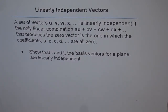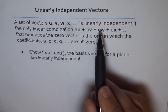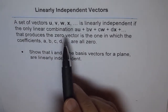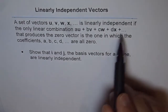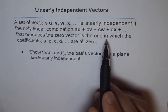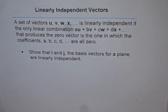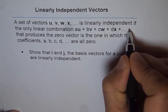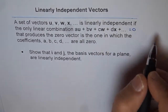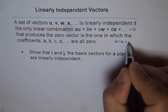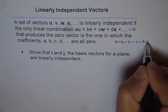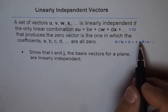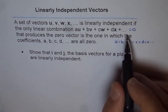Let's look at the definition of linearly independent vectors. A set of vectors u, v, w, x and so on is linearly independent if the only linear combination au + bv + cw + dx + ... that produces the zero vector is the one in which all coefficients a, b, c, d are equal to 0.